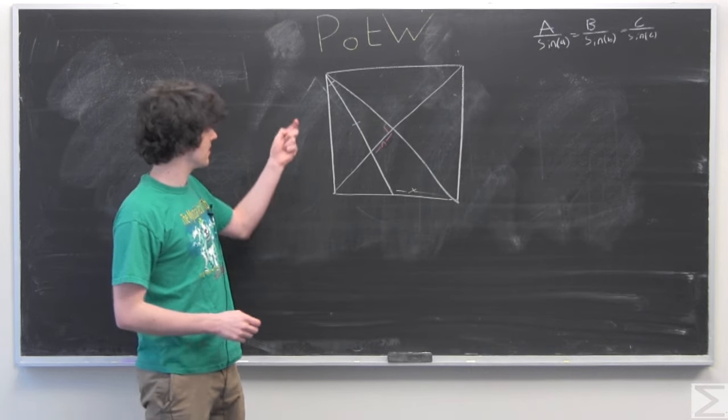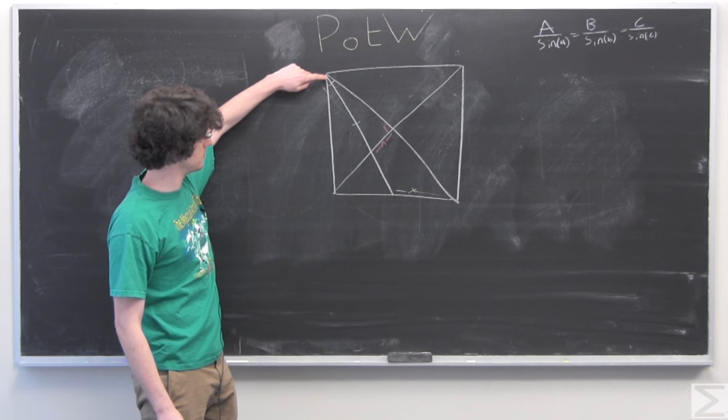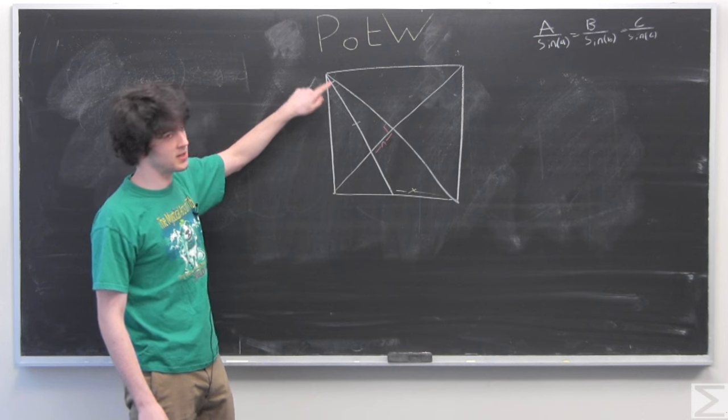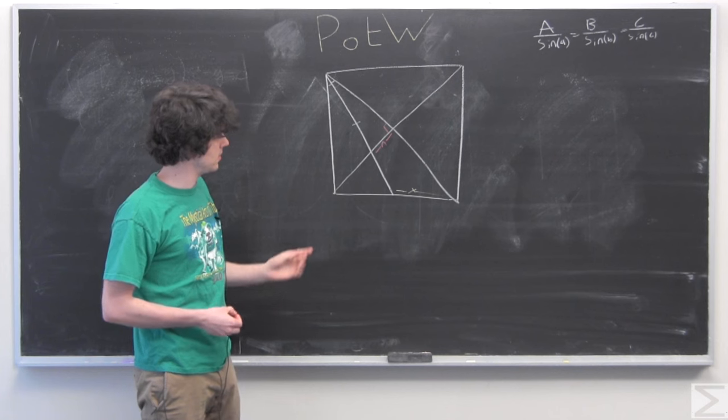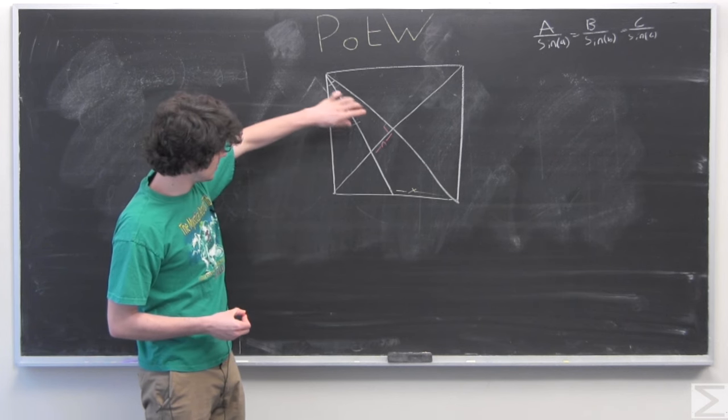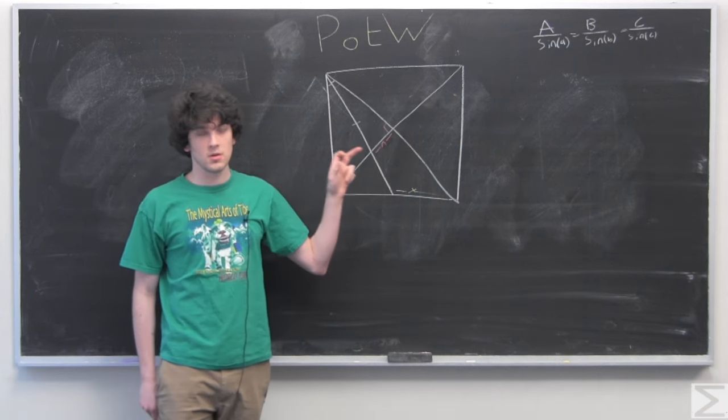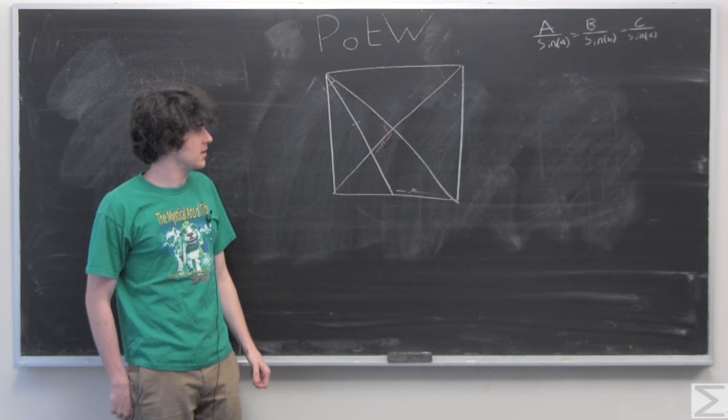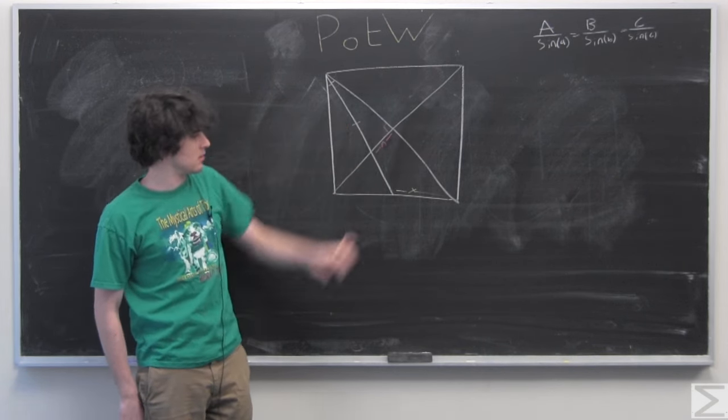One more thing is that we're given that this line here is the angle bisector of this larger angle. So we also know that since the diagonals form four equal length line segments, that these triangles here are all isosceles.